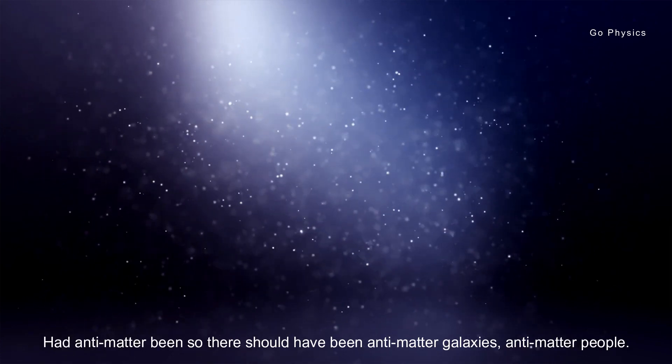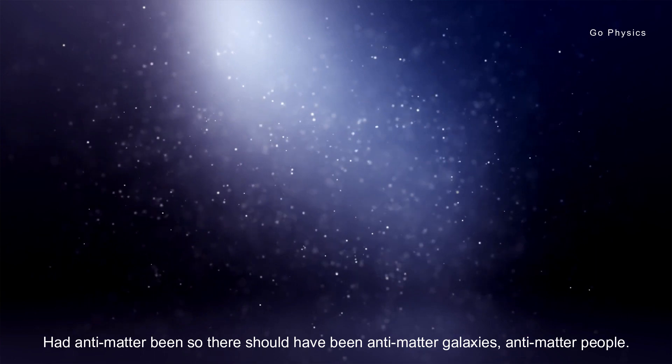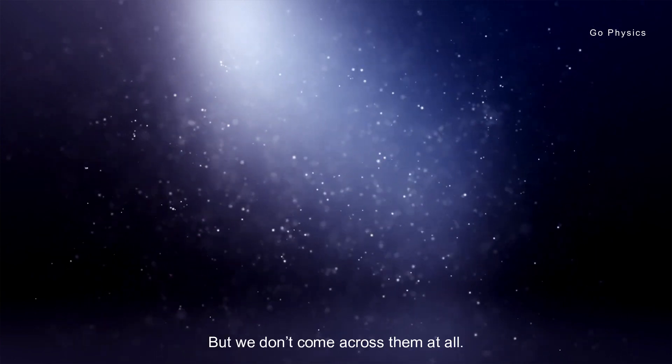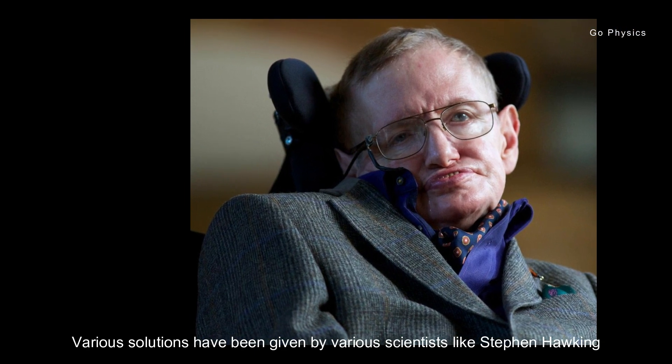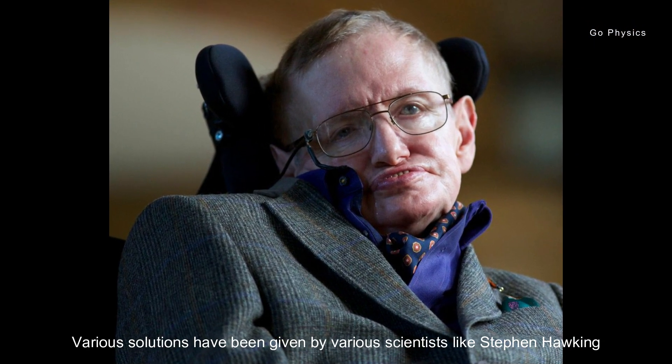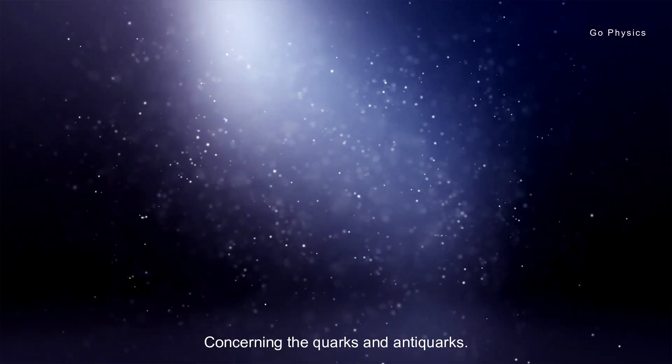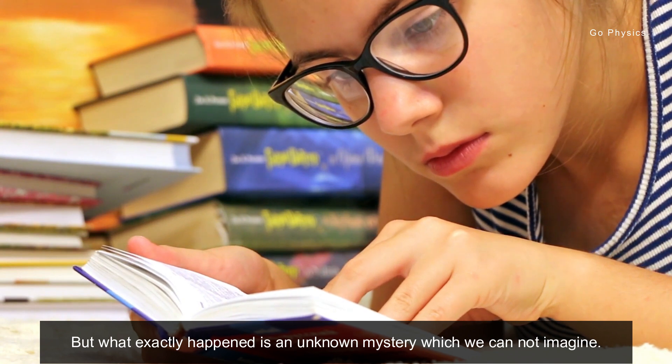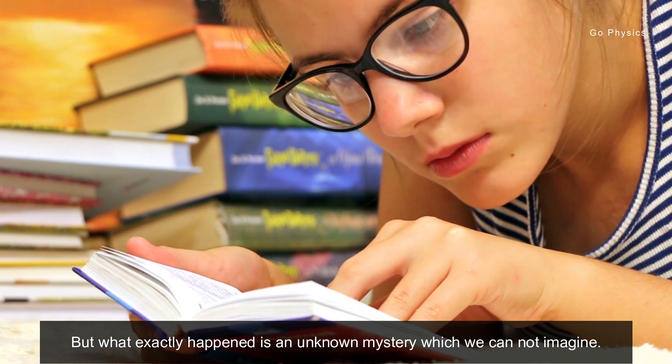So why is there far more excess of matter than antimatter? Why don't we see antimatter in our daily life? Had antimatter been so, there should have been antimatter galaxies, antimatter people, but we don't come across them at all. Why does this happen? Various solutions have been given by various scientists like Stephen Hawking, who tries to answer this problem with the help of standard models of particle physics concerning the quarks and antiquarks. But what exactly happened is an unknown mystery which we cannot imagine.